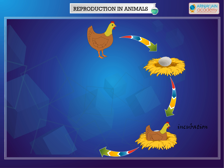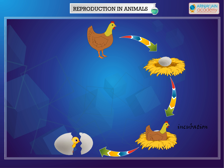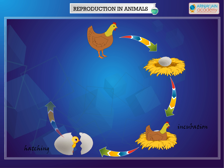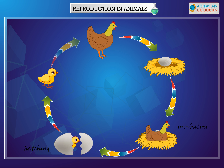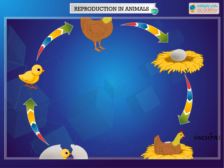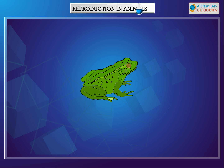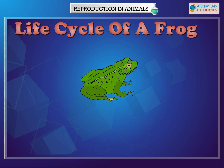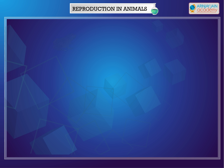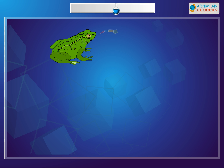When the chick is fully developed, it breaks out of the eggshell. This is called hatching. The chick then grows into an adult. Similarly, the life cycle of a frog has these stages.